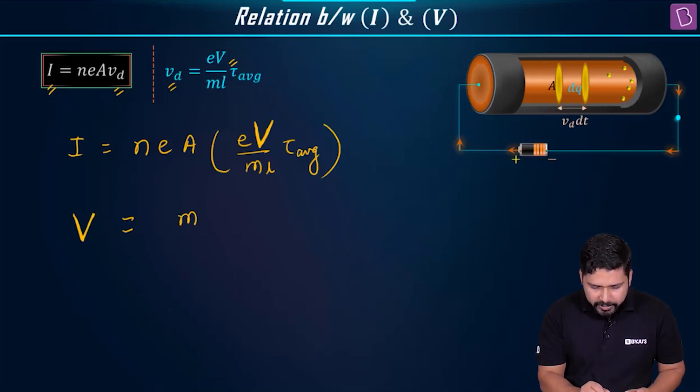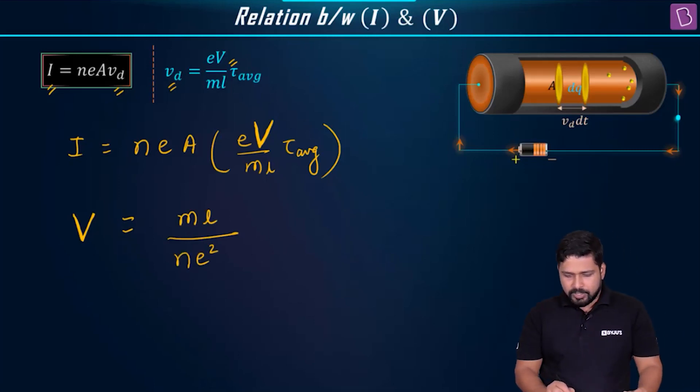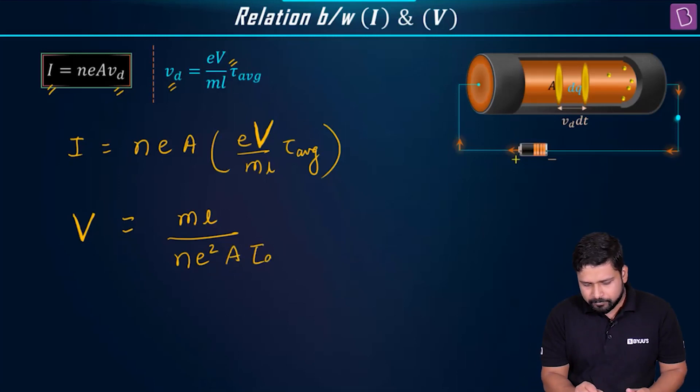M and L will be in the numerator. This will be N E squared, N E squared. We'll have A and we'll have tau average. Did I miss out on any term? N E into E squared, A. We have M L in the numerator, tau average. And then we'll have I.